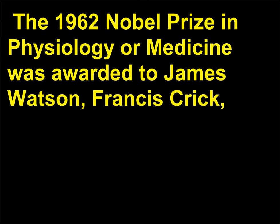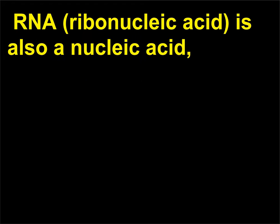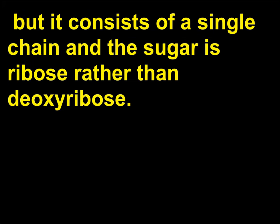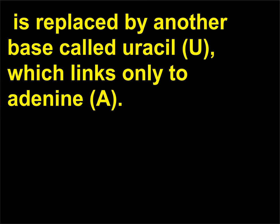The 1962 Nobel Prize in Physiology or Medicine was awarded to James Watson, Francis Crick, and Maurice Wilkins (1916–2004) for determining the molecular structure of DNA. RNA (ribonucleic acid) is also a nucleic acid, but it consists of a single chain and the sugar is ribose rather than deoxyribose. The bases are the same except that thymine (T), which appears in DNA, is replaced by another base called uracil (U), which links only to adenine (A).